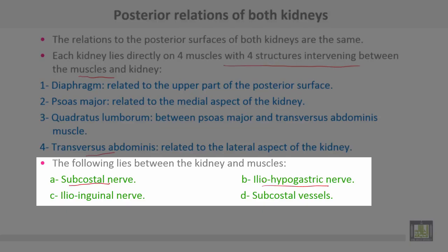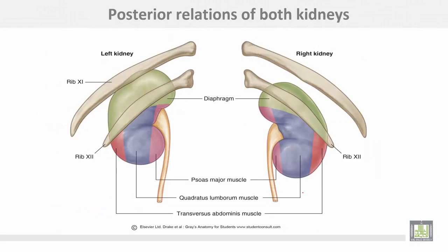The nerves between the kidney and the muscles are: the subcostal nerve, the iliohypogastric nerve, the ilioinguinal nerve, and the subcostal vessels. On the posterior surface, the diaphragm is most superior, psoas major is most medial, transversus abdominis is most lateral, and quadratus lumborum lies between them, along with the lower two ribs. The vessels and nerves related to the posterior surface pass between the muscles and the kidney.